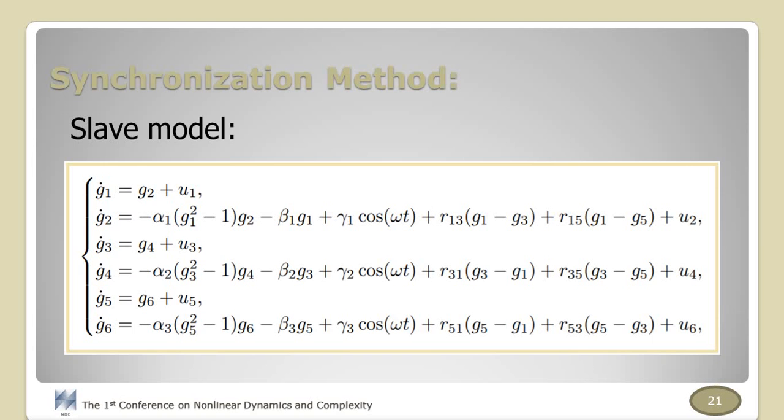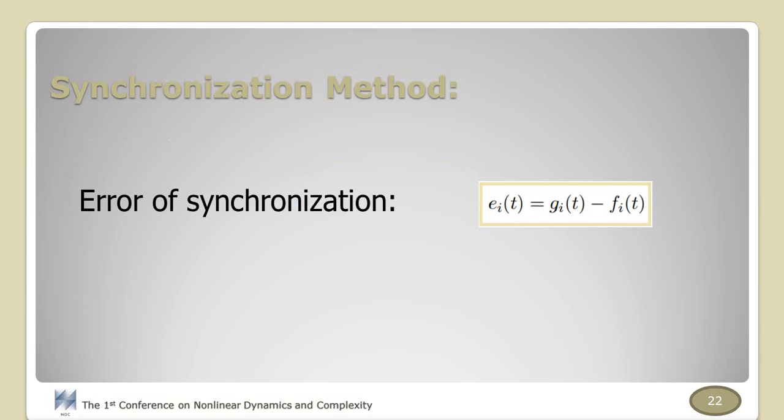In the next section, we synchronize two identical hyperchaotic cardiac oscillators. For integer model, generally nonlinear non-autonomous biological systems are hard to synchronize due to the complexity of their behaviors. Thus we apply a systematic synchronization action plan. To this aim, we consider this equation as the slave system, in which Ui and Gi are the control input and the state variables of the slave model. Considering the error of synchronization like this equation, the master system and slave system can be globally and asymptotically synchronized using this control law.